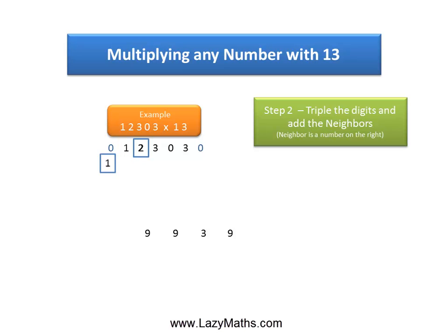Then the next pair 1 and 2, triple of 1 is 3 plus the neighbor 2 gives us a 5.